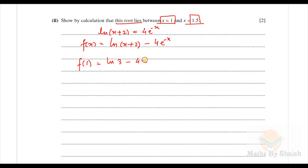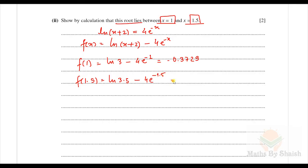From the calculator, f(1) = -0.3729. And f(1.5) = ln(1.5+2) - 4e^(-1.5) = ln(3.5) - 4e^(-1.5), which gives 0.3603. We can see f(1) is negative and f(1.5) is positive, and hence the root lies between 1 and 1.5.